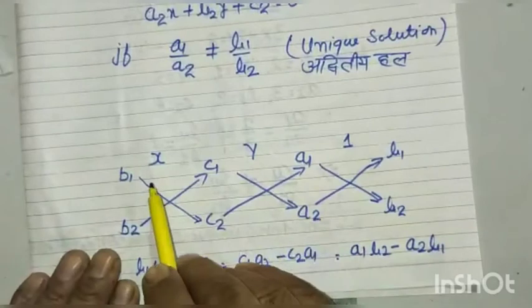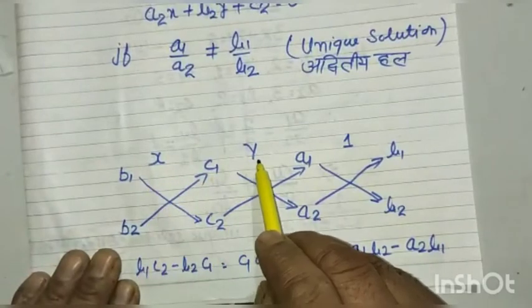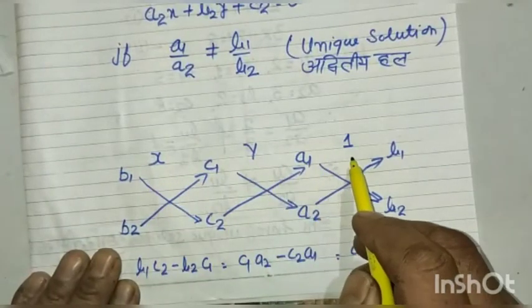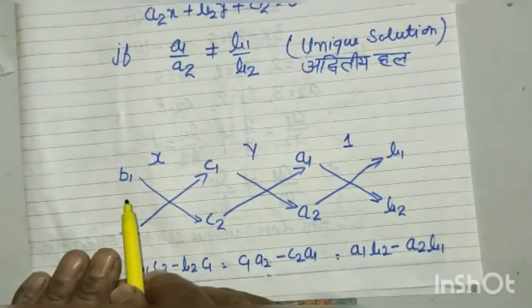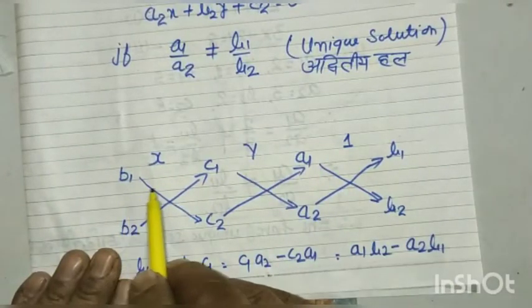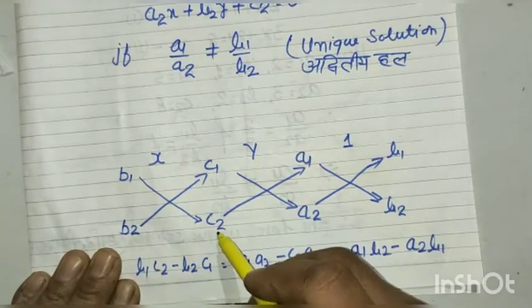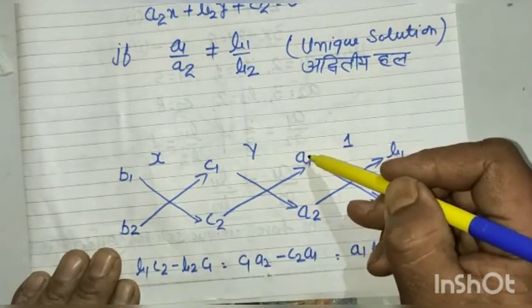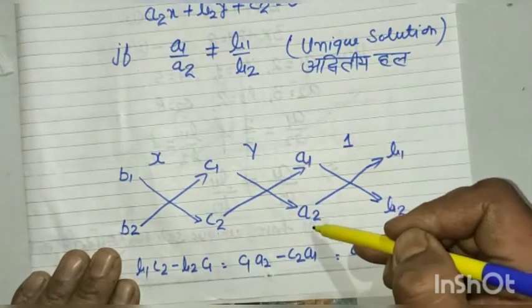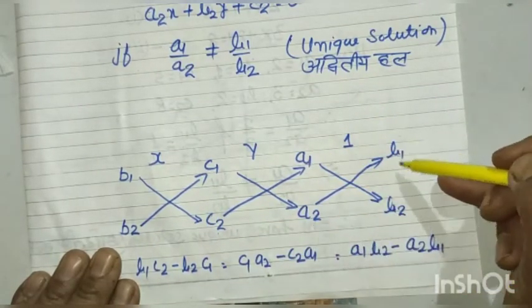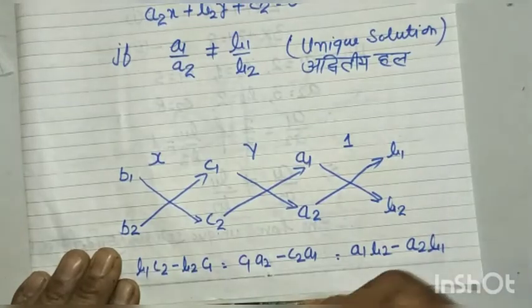The diagram is structured with x, y, and 1 across the top, and the coefficients arranged as: b1, b2, c1, c2, a1, a2, b1, b2 below.